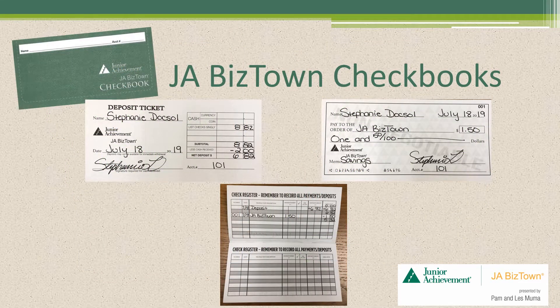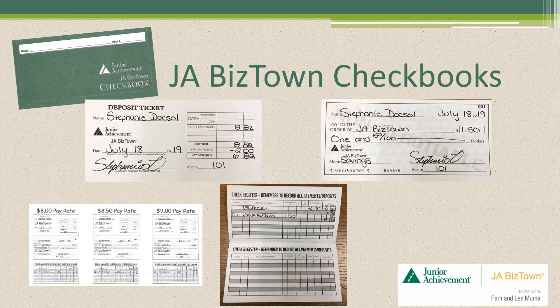Next, you have the JA BizTown checkbooks. The checkbooks are provided for each student to use during the simulation. They should not be used in the classroom until they are distributed during the lesson immediately prior to the JA BizTown visit. This is where they will create their first deposit ticket, a $1.50 savings check, and update their transaction register based on their pay rate. If students ever get confused, the last page of their checkbook provides a cheat sheet for them. Please be aware, the practice checkbook materials for classroom use are included in the student citizen guide.